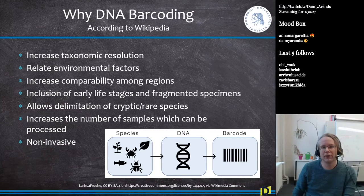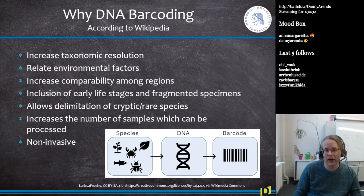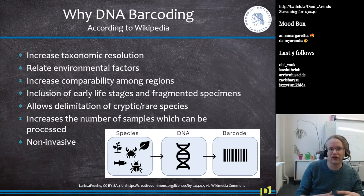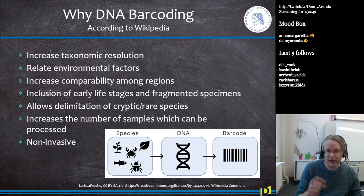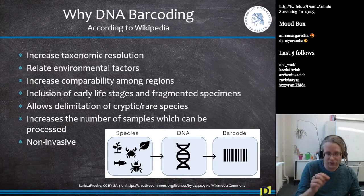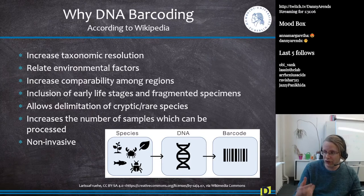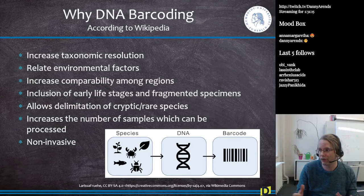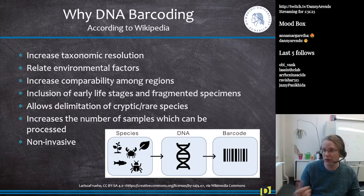So why would you want to do DNA barcoding? I looked this up on Wikipedia because I'm not an expert, but there are a lot of advantages. One is that it increases your taxonomic resolution. You can imagine that if you take a water sample and put a drop under a microscope, you can only look at a couple of drops and have to classify all the animals you see — it's a lot of work. By using DNA barcoding, you just take your sample, extract DNA, sequence it, and compare back to a database, which will directly tell you if there are a thousand different bacteria in your sample.